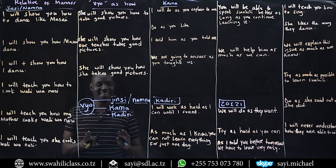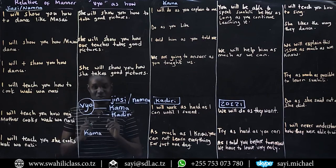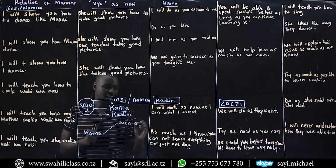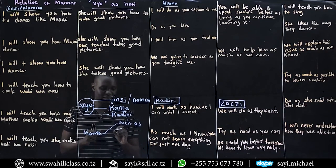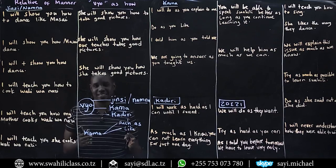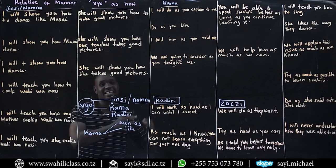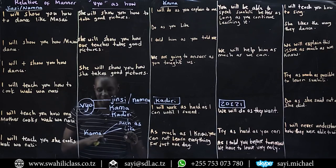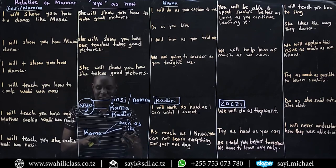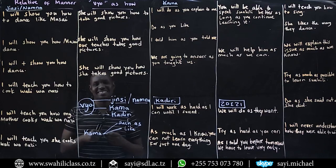I'm sure you understand that kama sometimes is if. Kama can be such as, or kama can be like. So kama is like when you have two nouns in a sentence — for example, leo ni kama jana: today is like yesterday. Kama can also be such as once you have more than two nouns in your sentence.